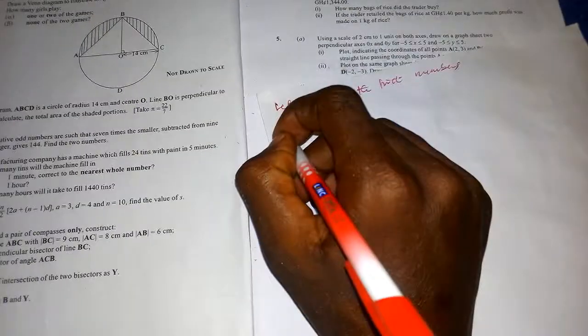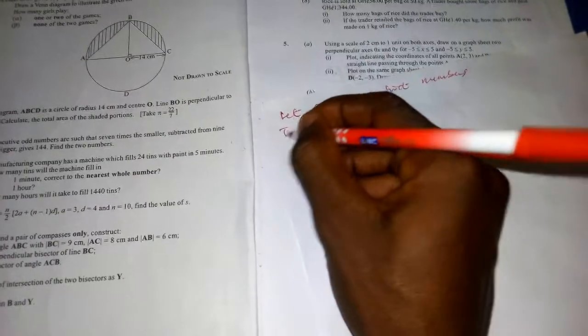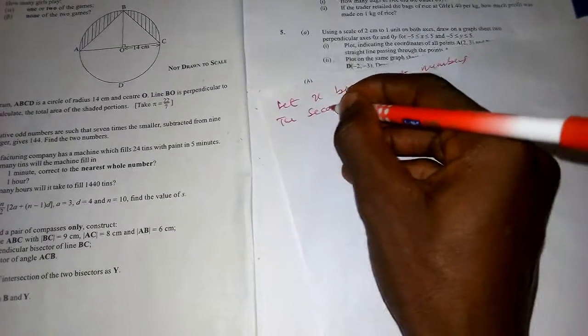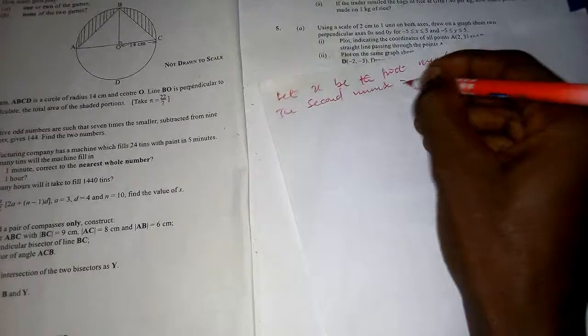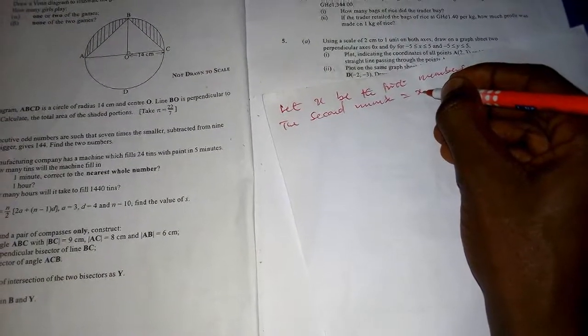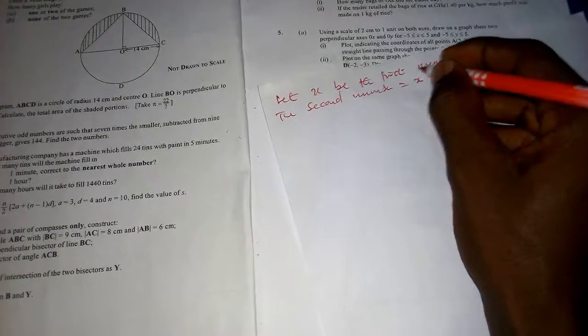And the second one equals X. If I add two to X I'll get the next odd number, so X plus two.